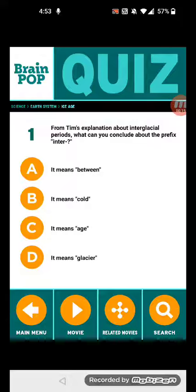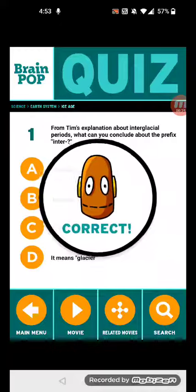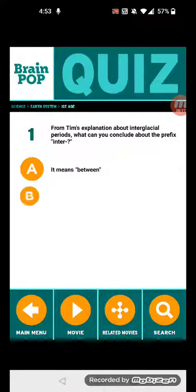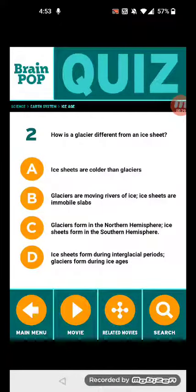Let's get started. Question 1: From Tim's explanation about interglacial periods, what can you conclude about the prefix 'inter'? It means 'between'. Question 2: How is a glacier different from an ice sheet? Glaciers are moving rivers of ice, ice sheets are immobile slabs.